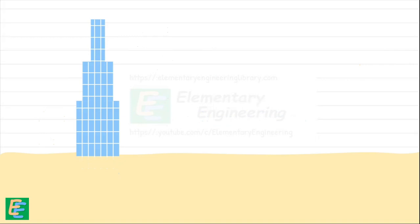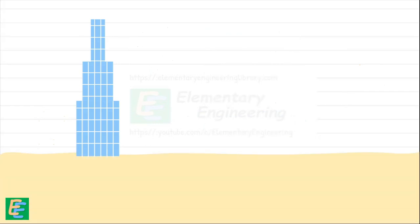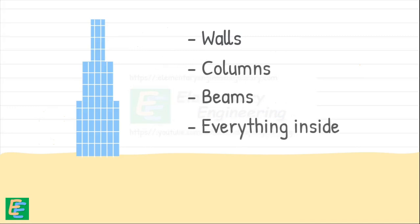Structures can fail for many reasons: poor design, bad material, unexpected loads, or even an earthquake. But sometimes the problem isn't what's above the ground—it's what's below it. All the load of a building, its walls, columns, beams, and everything inside, is ultimately supported by the soil below. If the soil can't handle the load, the building is in trouble.